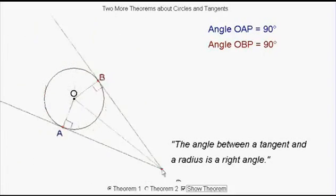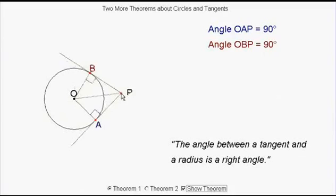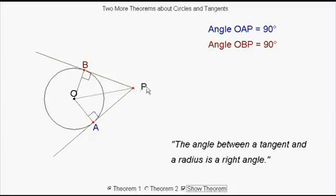The angle between a tangent and a radius is always a right angle. And it doesn't matter where we draw it from, wherever we go, a great distance or a short distance, the angle between a tangent and a radius is always a right angle.